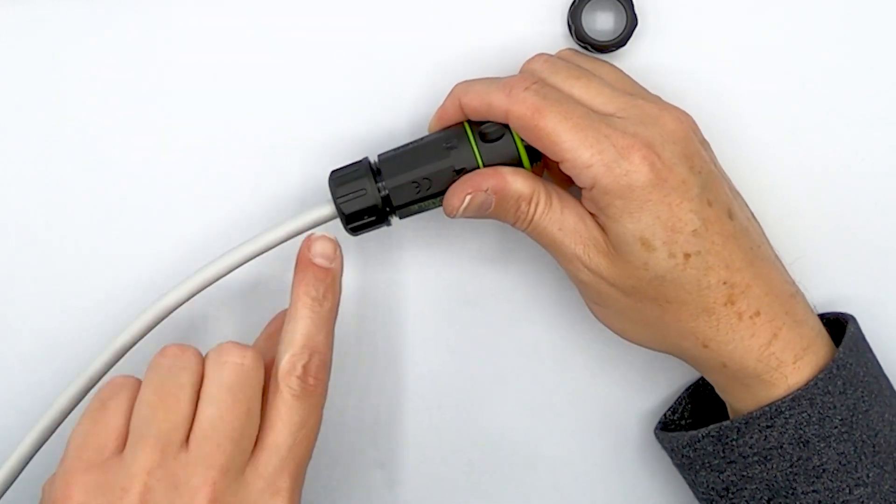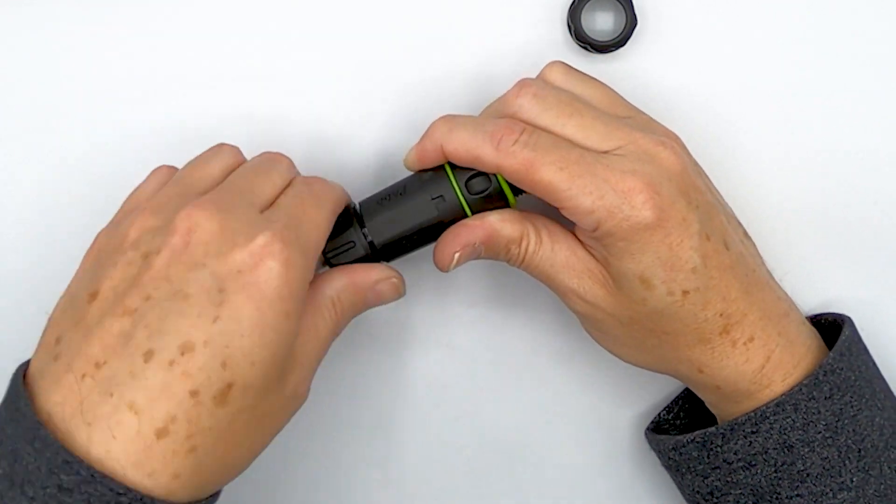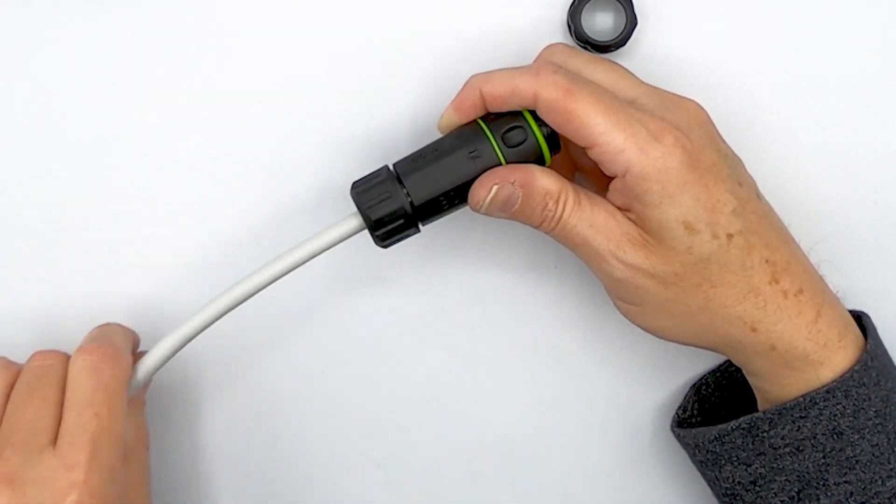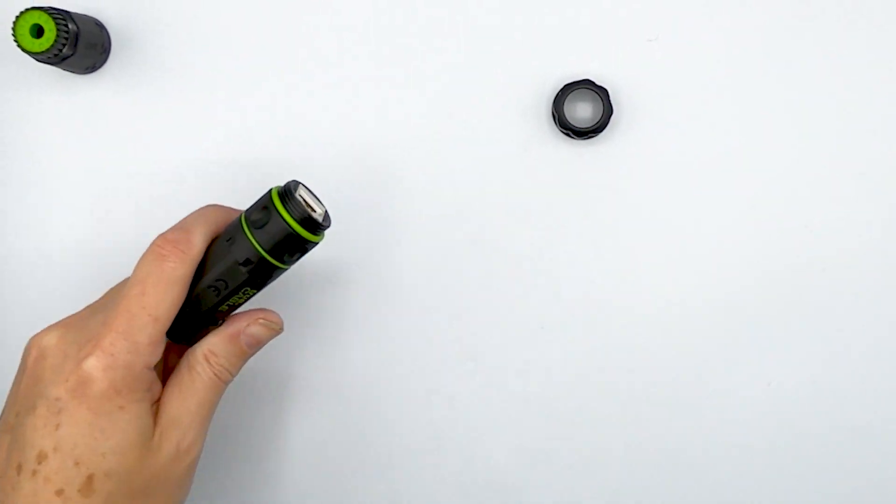And then tighten the rear one just like so. Again, you don't need to over tighten it. Just finger tight is good enough. And it's now got a very good seal around that grommet. And on the other end, you're going to do the exact same thing.